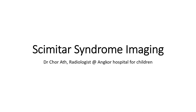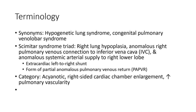Hello everyone, today I am going to show you about Scimitar Syndrome Imaging. It is synonymous with hypogenetic lung syndrome and congenital pulmonary venolobar syndrome. The Scimitar Syndrome triad consists of right lung hypoplasia, anomalous right pulmonary venous connection to the inferior vena cava, and an anomalous systemic arterial supply to the right lung — representing a form of partial anomalous pulmonary venous return.